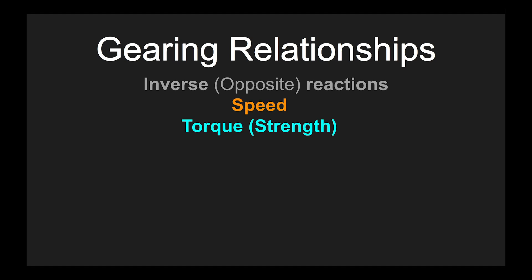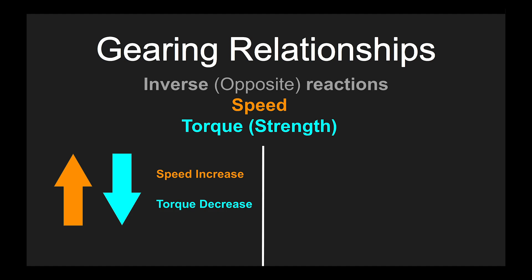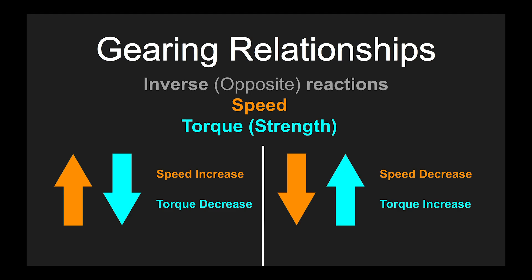In gearing relationships we have what is called an inverse or opposite reaction between speed and torque, which is otherwise known as strength. When the speed is increased, an inverse reaction is true for torque, which would then be decreased. Inversely, when the speed is decreased, the torque would be increased.